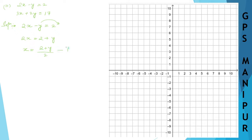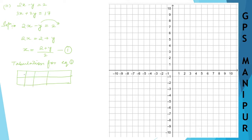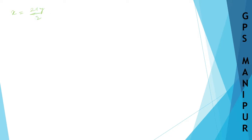This is equation number 1. Let me set up the tabulation for equation number 1 with columns for x and y. The equation is x equals 2 plus y divided by 2. When y is equal to 0, x will be 2 plus 0 divided by 2, which is 2 divided by 2, so x is 1.